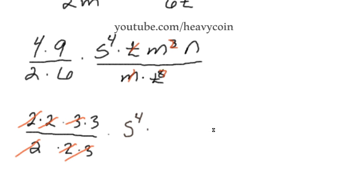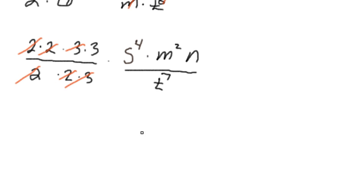Alright, so hopefully you didn't get too confused on that. And that's going to be m squared times n over, we cancel that m out and we're just left with t to the 7th in the denominator. Now of course we're going to write it like this, our final answer.